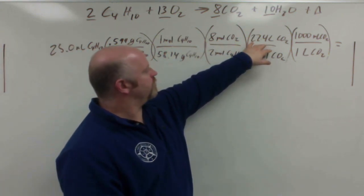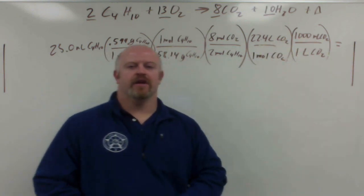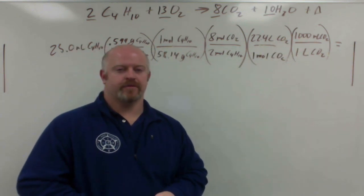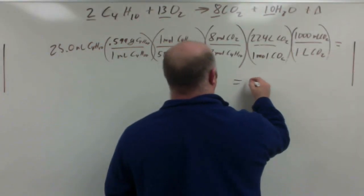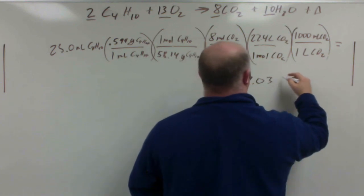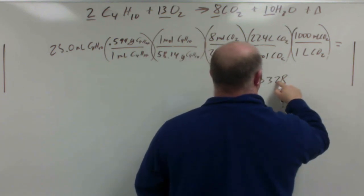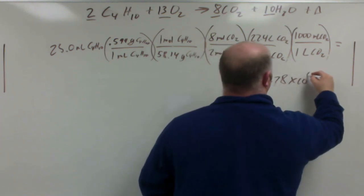So I take my 25.0 times 0.599 divided by 58.14 times 8 divided by 2 times 22.4 times 1000, and I'll get to my answer. So let's punch this into the calculator now.